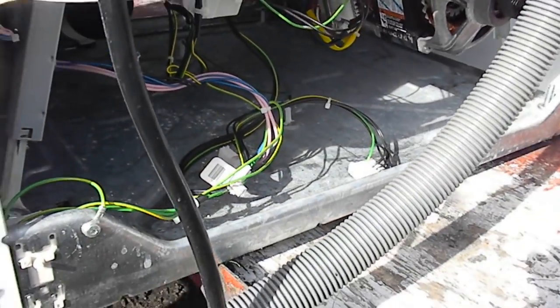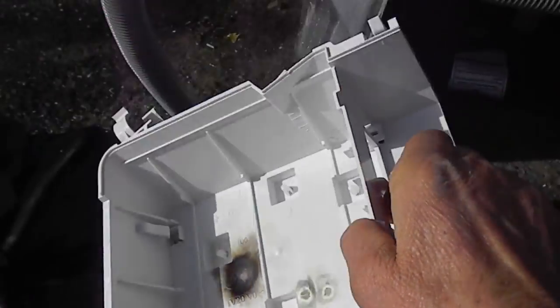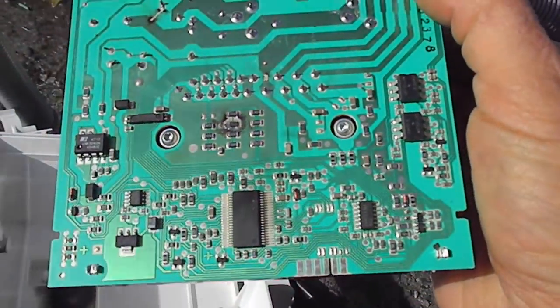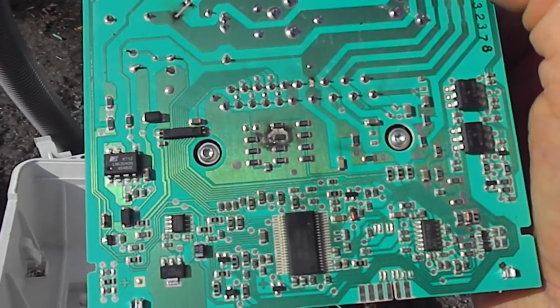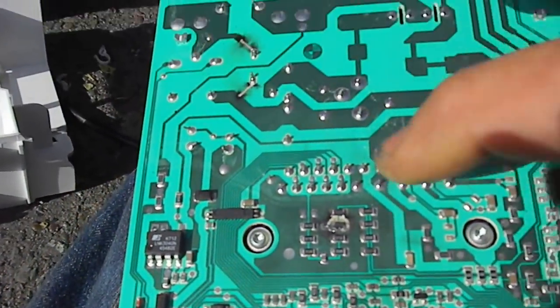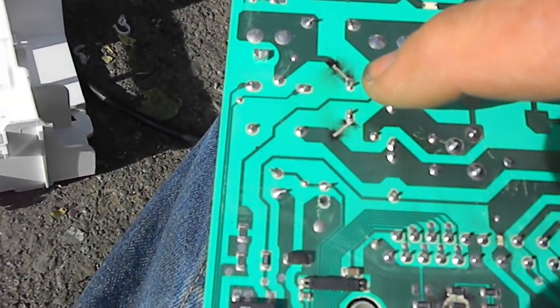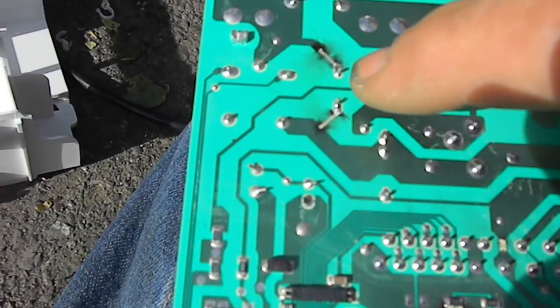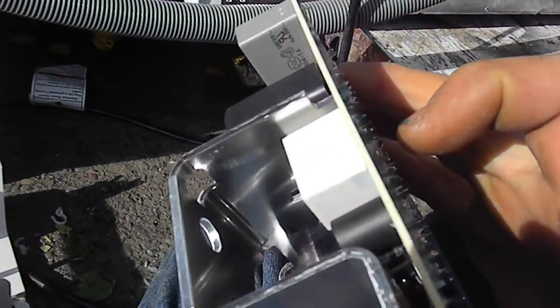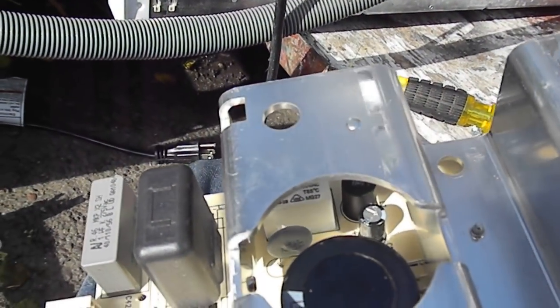You notice there's some burnt marks there. See, there's one resistor bad, got burnt out, and then there's two contacts that are totally fried. It looks like that is some sort of overload protector for the circuit.